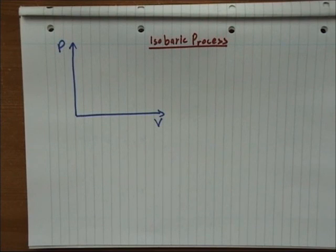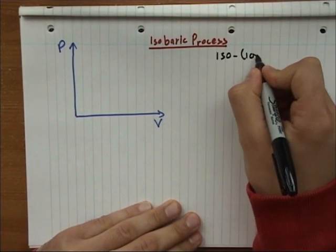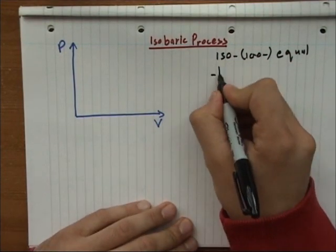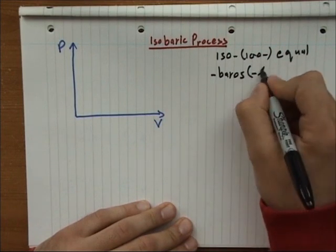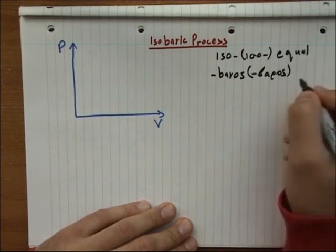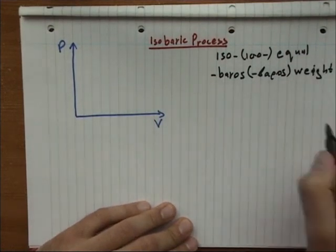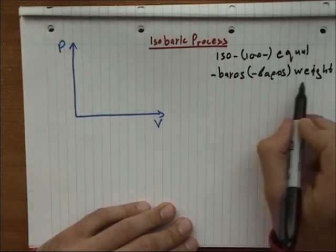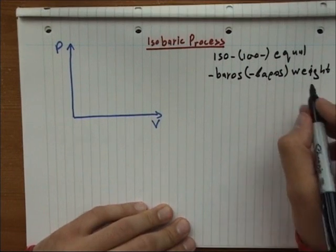Next, we're going to take a look at the isobaric process, which is derived again from iso, equal, and baros. In Greek it is baros, which is the weight of the gas, the masses of the gas, basically the force, and weight is associated in fluid mechanics with pressure.